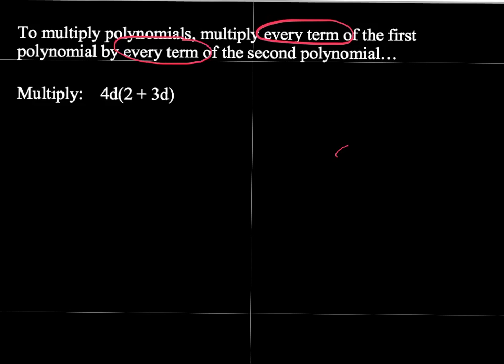So our first example, 4D times 2 plus 3D, that's pretty straightforward actually. We just multiply 4D times 2, which gives me 8D. Then we multiply 4D times 3D, which gives us 12D squared. So I just simply multiply every term of the first polynomial, which is just 4D, by every term of the second polynomial, which is 2 plus 3D.